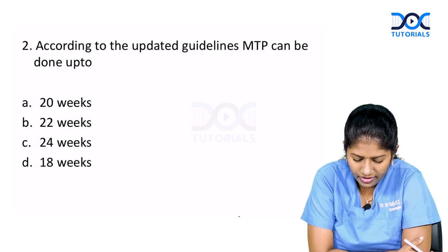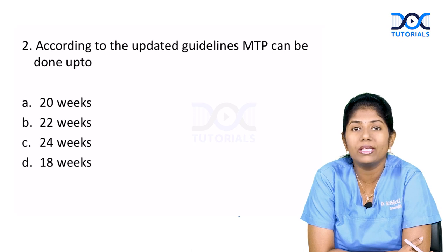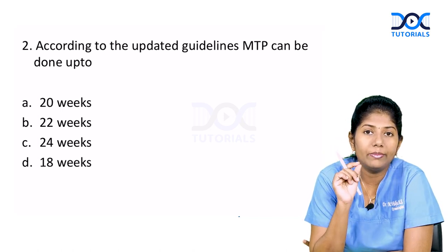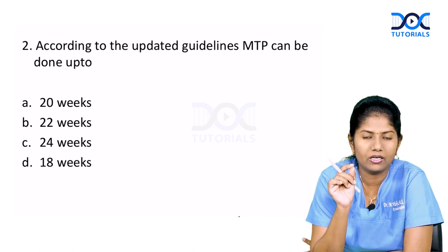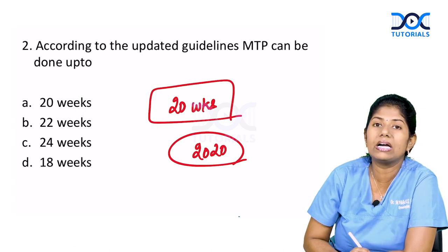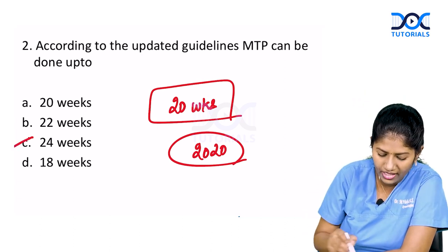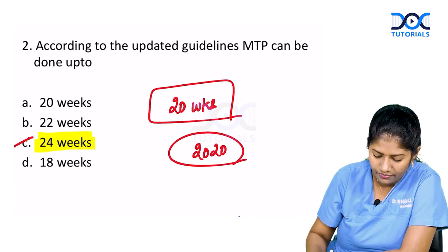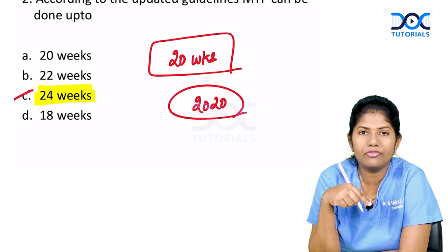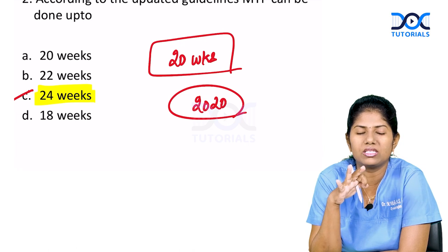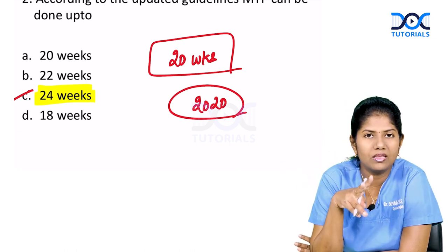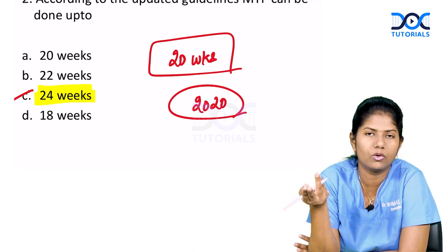According to the updated guidelines, MTP can be done up to how many weeks? According to the old MTP guideline, MTP could be done up to 20 weeks. But the recent 2020 guideline says MTP can be done up to 24 weeks. This year in the FMG exam, we had three questions from MTP — medical termination of pregnancy — and all were relatively easy and straightforward.